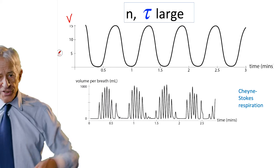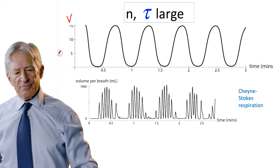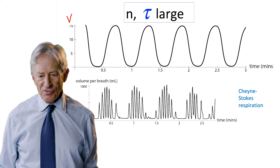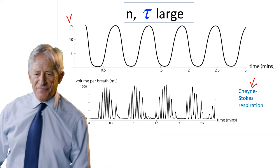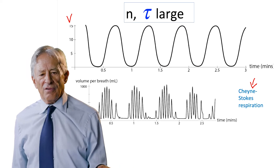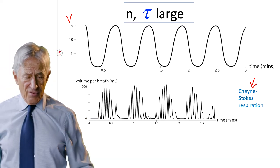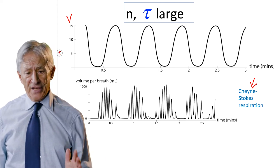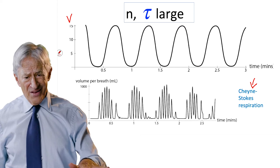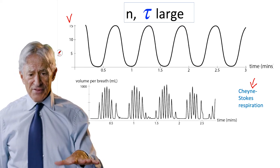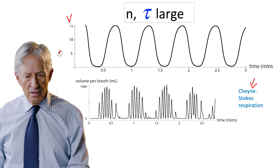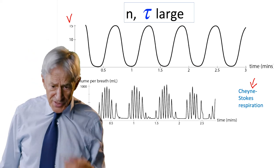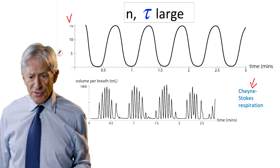But when N and tau are large, the ventilation rate becomes oscillatory. Now this is a pathology. It's called Cheyne-Stokes respiration. And if you go down certain wards, the heart failure ward is one, and there are aspects of neuro wards, you can actually walk down the corridor, you can hear Cheyne-Stokes respiration coming from the patient room.